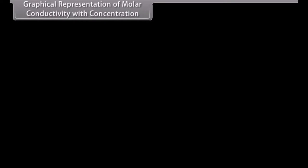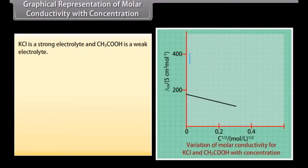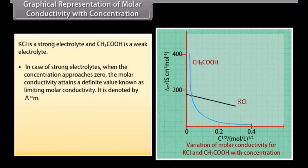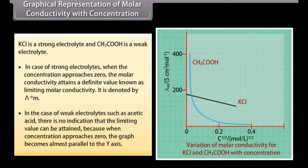Graphical representation of molar conductivity with concentration. KCl is a strong electrolyte and CH3COOH is a weak electrolyte. A graphical representation shows the variation of molar conductivity with concentration. In the case of strong electrolytes, when the concentration approaches zero, the molar conductivity attains a definite value known as limiting molar conductivity, denoted by λ°m. In the case of weak electrolytes such as acetic acid, there is no indication that the limiting value can be attained, because when concentration approaches zero the graph becomes almost parallel to the Y-axis.